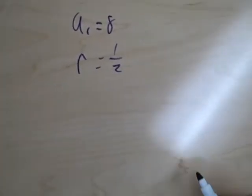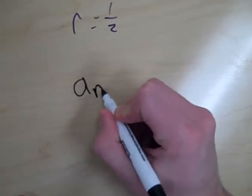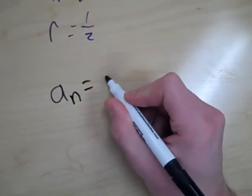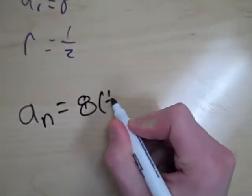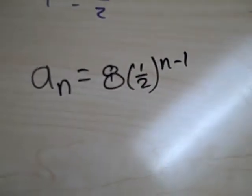I'm Steven and now to get the explicit formula all you do is plug it in. So a sub 1 is 8, the r value is half, and then you just get n minus 1 and that's your final answer.